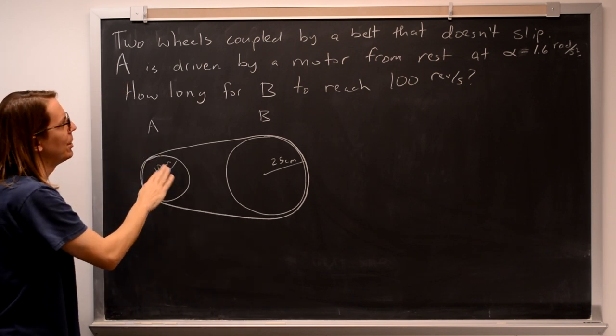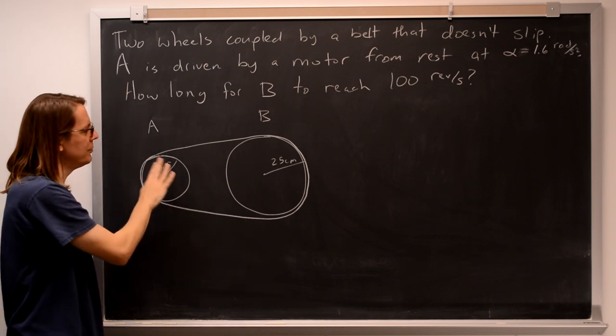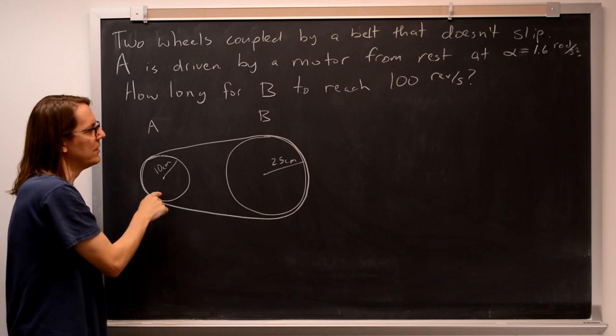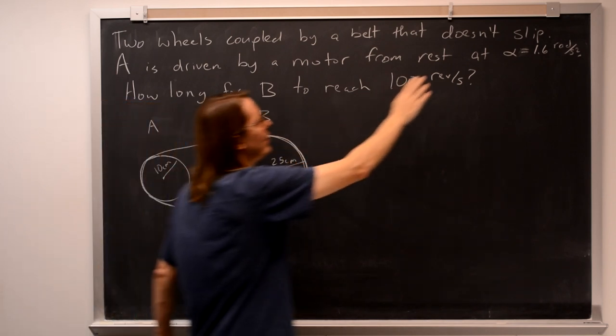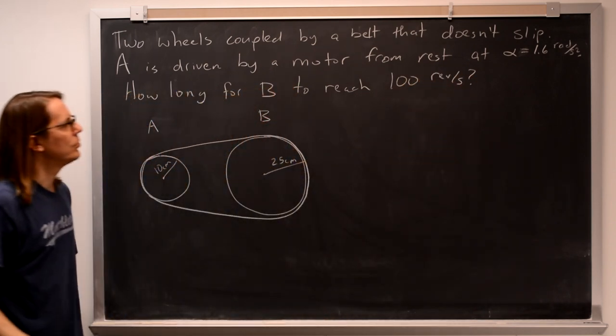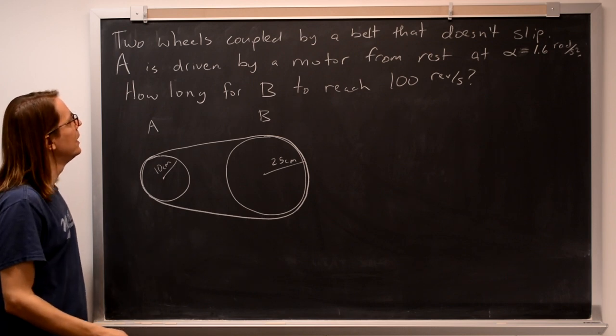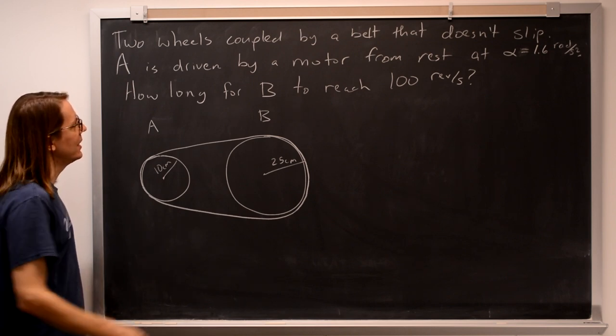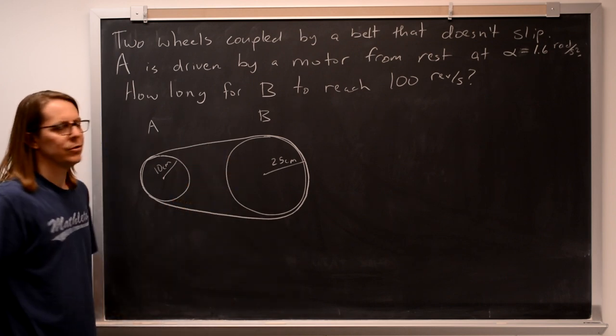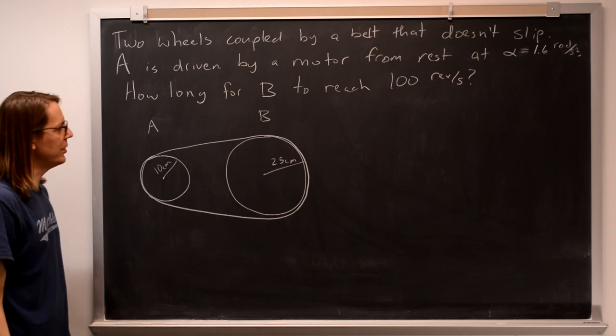Wheel A is driven by a motor, so A is being forced, the motor is applying torque to accelerate with angular acceleration of 1.6 radians per second squared. And the question is, in that case, how long does it take B to reach 100 revolutions per second?